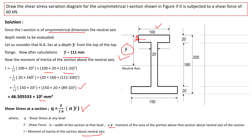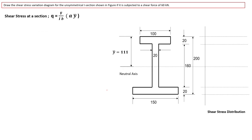The key variation from a symmetrical section is that the neutral axis does not lie at the midway. At Section 1 — taken just at the top of the top flange — since there is no area above this section, the shear stress is equal to 0.